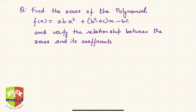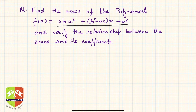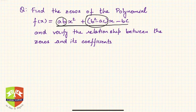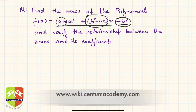In this question we have to find out the zeros of the polynomial f(x) = abx² + (b² - ac)x - bc. This is a given quadratic polynomial. The coefficient of x² is ab, coefficient of x is b² - ac, and the constant term is -bc. We have to find the roots and verify the relationship between the zeros and the coefficients.